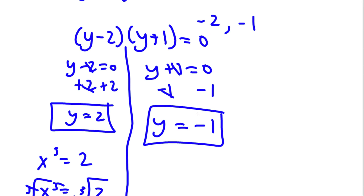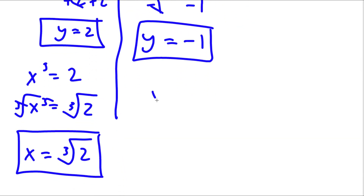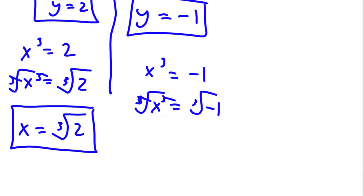Now for y equals negative 1, I have x to the power of 3 is equal to negative 1. Now if I take the cube root on both sides, these two cancel out and I get x is equal to the cube root of negative 1, which is simply negative 1.